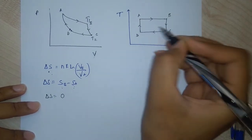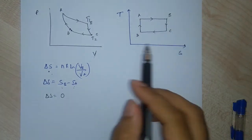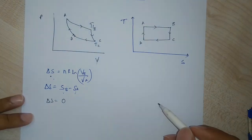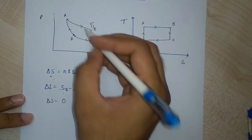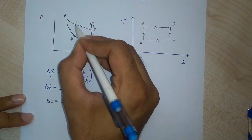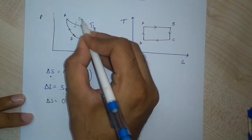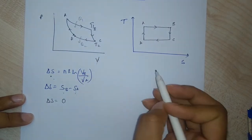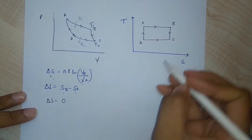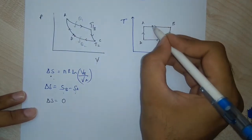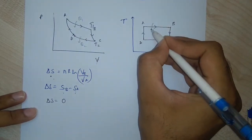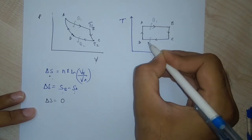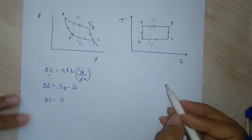From D to A there is again a change in temperature but entropy remains constant. This is how the TS curve looks for a Carnot cycle. Just as in the PV diagram we had heat input q1 and heat rejected q2, we similarly show heat input and output on the TS diagram.